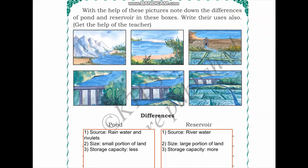The next exercise is to find differences between ponds and reservoirs using the pictures provided, and also note their uses. In the first image, water flows from a high region into the pond. One difference is the source of water: rainwater and rivulets are sources for ponds, whereas river water is the source for reservoirs.